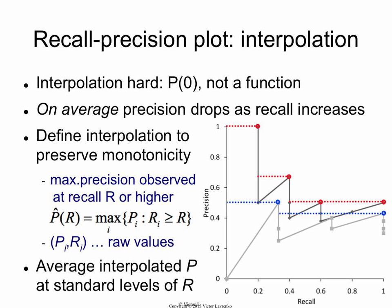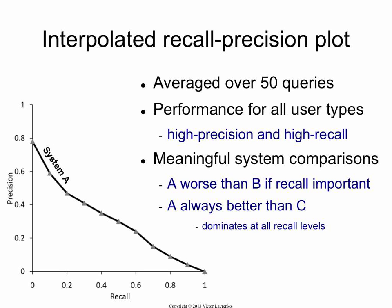Once you have interpolated values, you have a defined precision for every recall level, so you can compute the average of the two curves — taking the average of corresponding values at each recall level. Typically, this average curve is computed over 11 standard recall levels: 0%, 10%, 20%, all the way to 100%. You then report precision at those levels. Here is an example averaged over 50 different queries, giving 11 recall points with corresponding precision values.